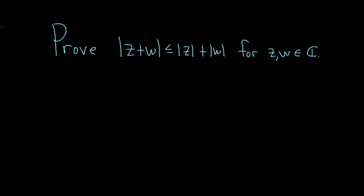Hi everyone. In this problem we're going to prove the triangle inequality for complex numbers. We're going to show that the modulus of z plus w is less than or equal to the modulus of z plus the modulus of w for all complex numbers z and w.